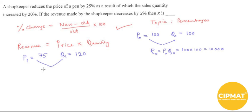So now the revenue that I will get is R₁, that is P₁ times Q₁, which will be 75 into 120, and this equals 9,000.